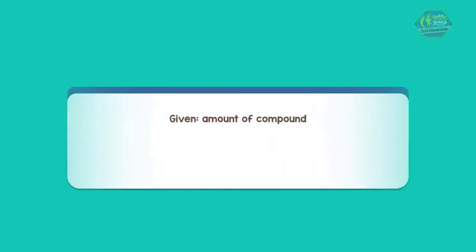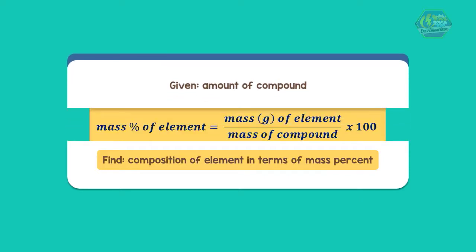For many purposes it is important to know how much of an element is present in a given amount of compound. For that we find the composition of a compound in terms of mass percent of each element. To determine mass percent of the element we have this formula. As always, the individual mass percents add up to 100.